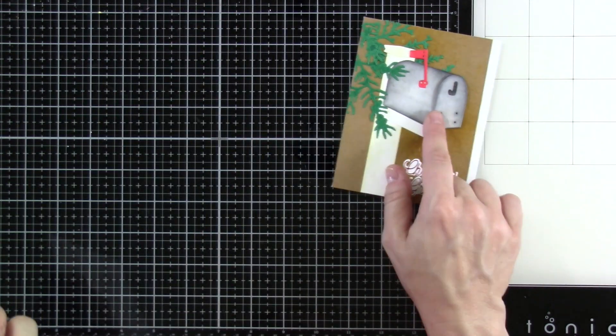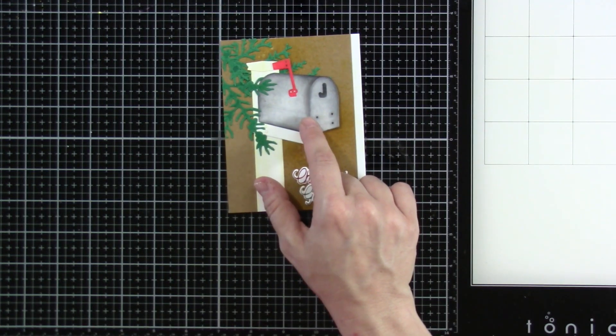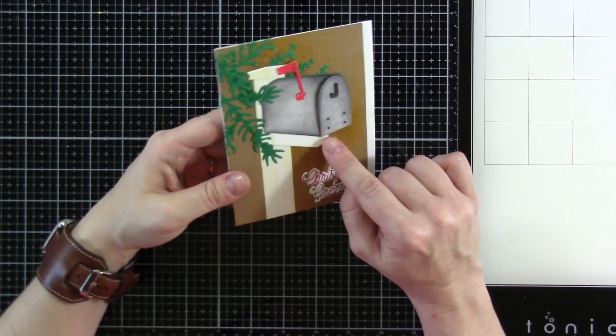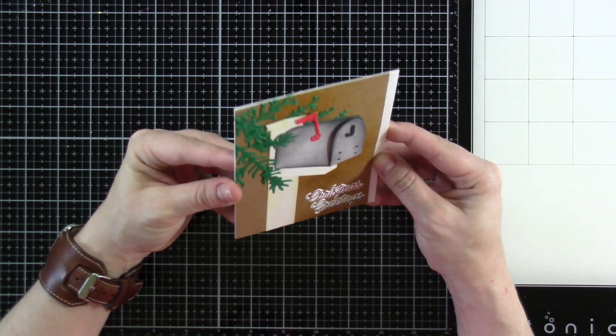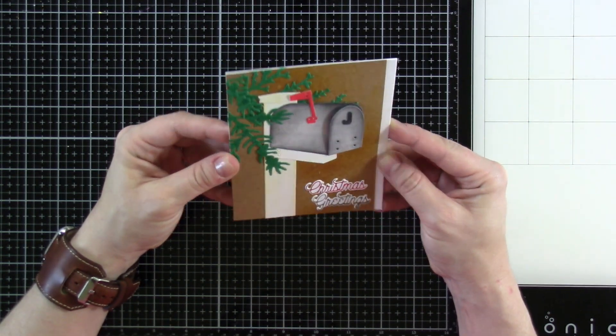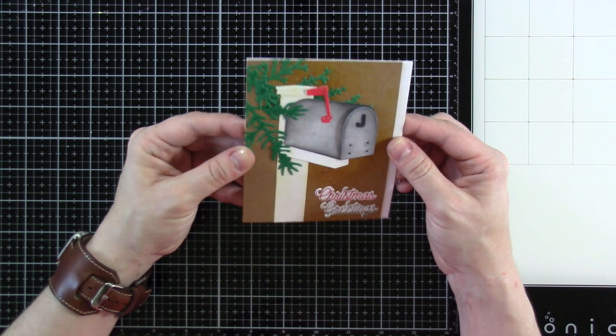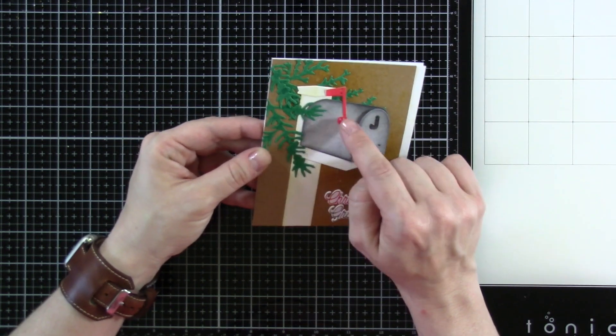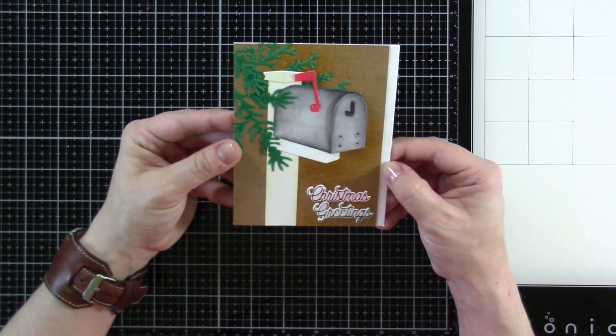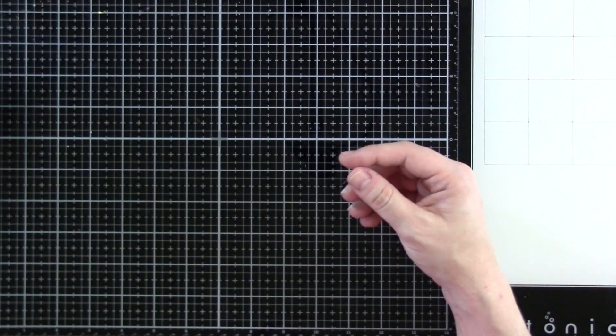And then we also have the Letterboxd. So here's the Letterboxd die. It is fantastic. And here's the piece I have all cut out. So cute. And this flap you could have come down, which I think is super cute. And if you wanted, you could probably make the flag go up and down if you just use a little brad. Wouldn't that be cute? So there's that.